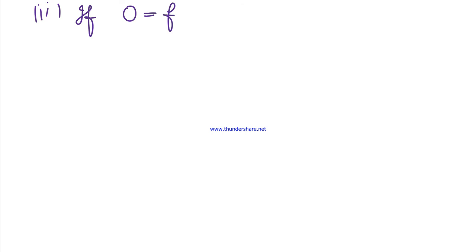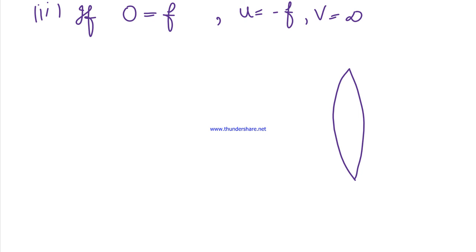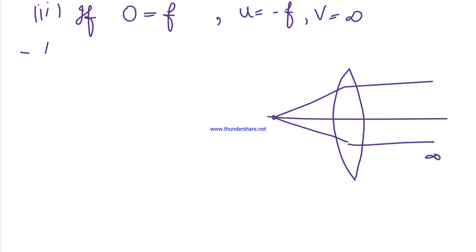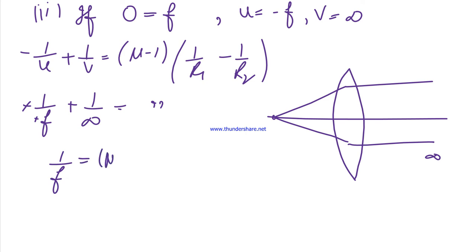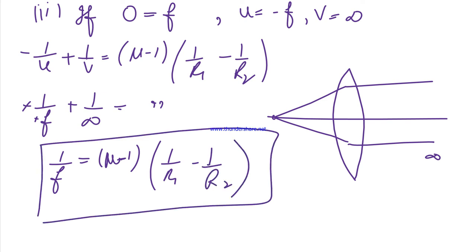Second special case: if the object is placed at the focus, then the image will be formed at infinity. So u equals minus f and v equals infinity. Substituting: minus 1/f + 1/infinity = (mu minus 1)(1/R1 minus 1/R2). Since 1/infinity is 0, we get: 1/f = (mu minus 1)(1/R1 minus 1/R2) — again the same answer. So that is today's topic, the lens maker's formula, which is a most important topic. Thank you.